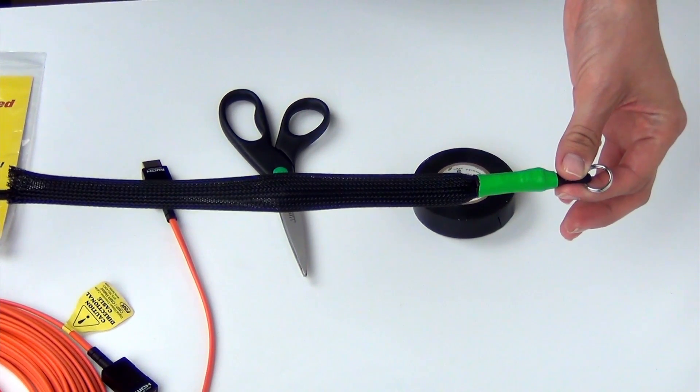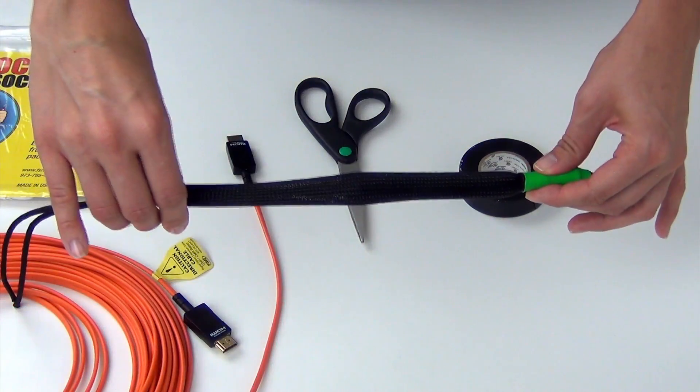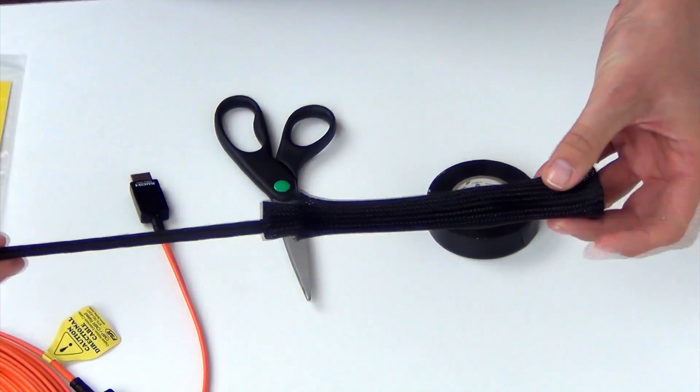First, hold the puller by the ring area and the end of the outer band. Next, slide the outer braid toward the ring, folding it back on itself, exposing the inner braid.